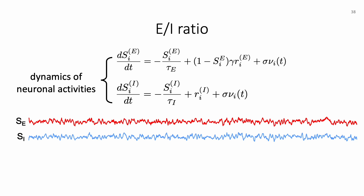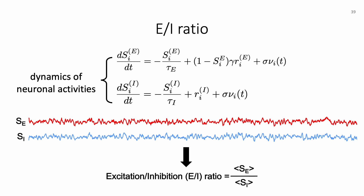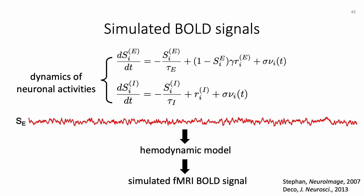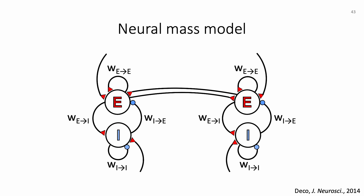For each cortical region there are two time courses: one for SE and one for SI. The EI ratio can be defined as the ratio of temporal averages of these two time courses. Additionally, by taking the simulated time courses of excitatory synaptic gating variable and passing them through a hemodynamic model, we can obtain simulated fMRI BOLD signals used to optimize model parameters. Two metrics—functional connectivity and functional connectivity dynamics—are used to optimize these parameters.